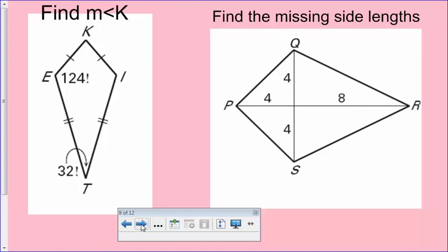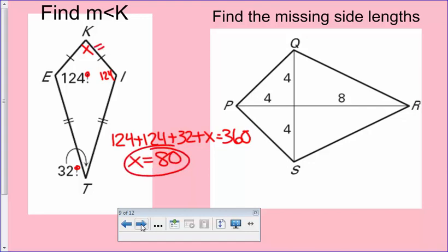Let's take a look at these two. We're trying to find the measure of angle K, so I'm just going to mark that X. We are given 32 degrees, 124 degrees, X. And then I should also take notice that E and I are going to be like congruent angles. So I'm going to label I as 124. Just like we did on the last one, 124 plus 124 plus 32 plus X should equal 360 because it is a quadrilateral and a kite. Go ahead and do the math and figure out what angle K is. You should have gotten X to equal 80, which is the measure of angle K, 80 degrees.